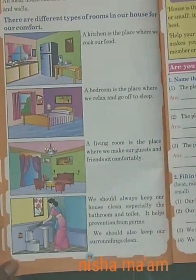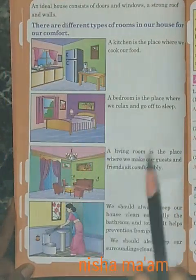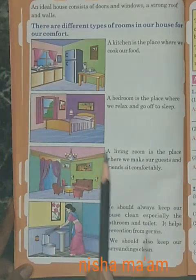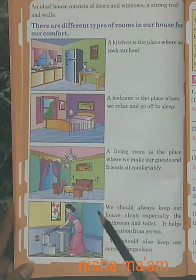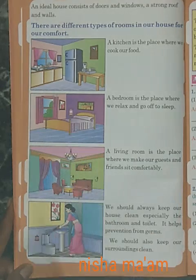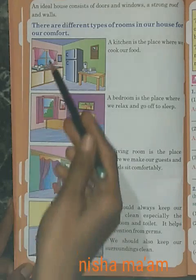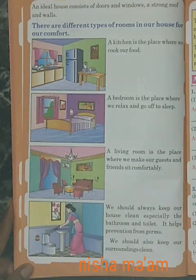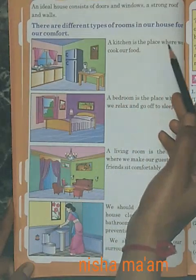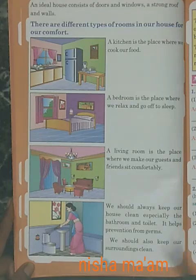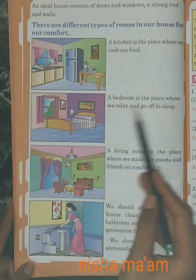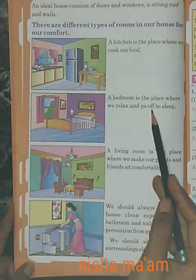हर room का use उसी काम के लिए होता है। मम्मी kitchen के अंदर नहीं सोती, bedroom में सोती हैं। Kitchen में खाना बनाते हैं, bed पर नहीं। A kitchen is the place where we cook our food. A bedroom is the place where we relax and go off to sleep.